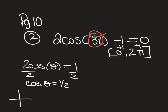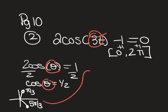We want every place on the unit circle where cosine equals one-half. That happens at π/3 and at 5π/3. But we didn't actually have theta — we had 3t — so we need to address that. Right now we have theta equals those two solutions: π/3 and 5π/3.